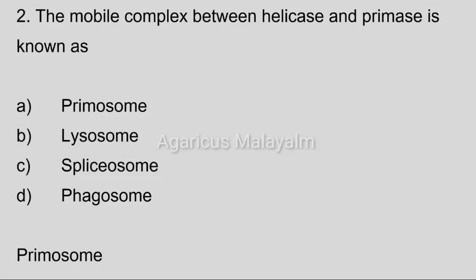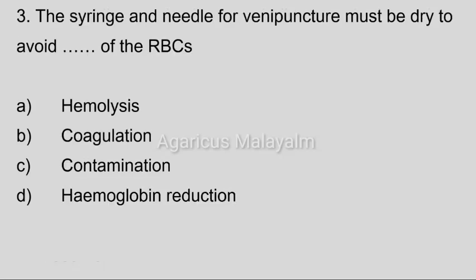Third question. The syringe and needle for venipuncture must be dried to avoid dash of the RBCs. Option A, Hemolysis; Option B, Coagulation; Option C, Contamination; Option D, Hemoglobin Reduction. Correct answer: Option A, Hemolysis.